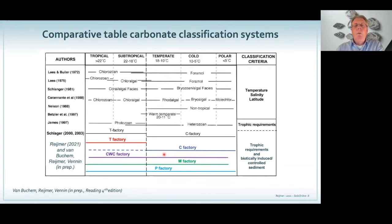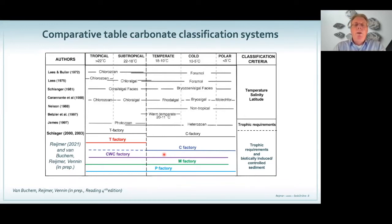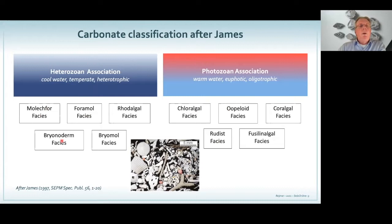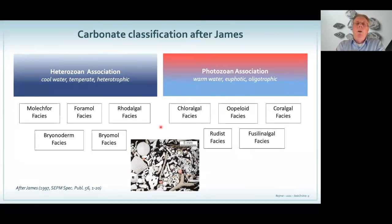Five is more or less the maximum number you should use — you can always make subdivisions, but try to look at what is the main thing you're looking at, what is the main production of sediment taking place. James showed the heterozoan association for cool water and the photozoan association for warm water — summarizing all the different terminologies that were used before. But I always get confused when abbreviations of biota are used — 'bryonoderm' to me sounds more like a bad disease than a type of facies. The heterozoan/photozoan terminology is used a lot nowadays.